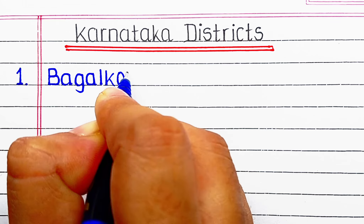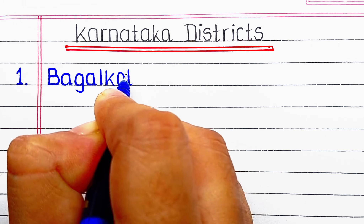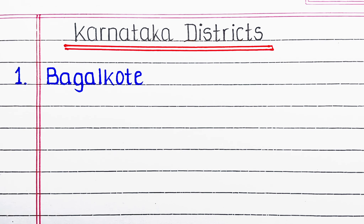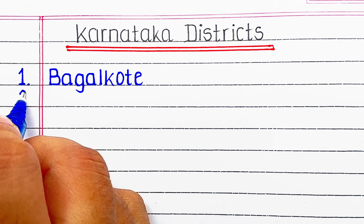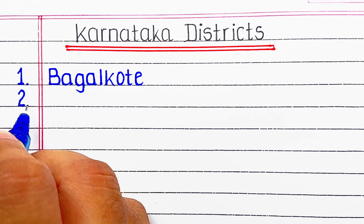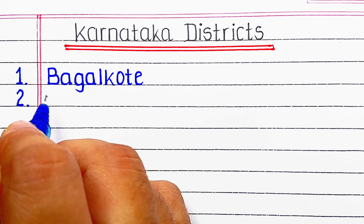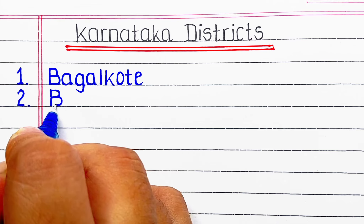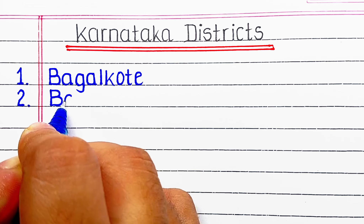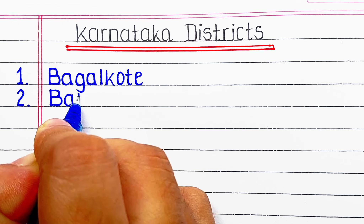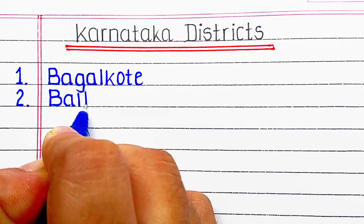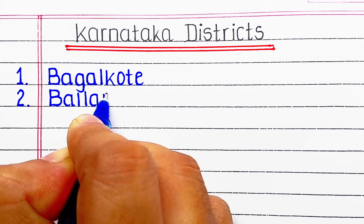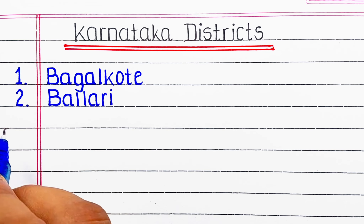Karnataka is a state in the southwestern region of India. The state is bordered by the Lakshadip Sea to the west, Goa to the northwest, Maharashtra to the north, Telangana to the northeast, Andhra Pradesh to the east, Tamil Nadu to the southeast, and Kerala to the southwest.